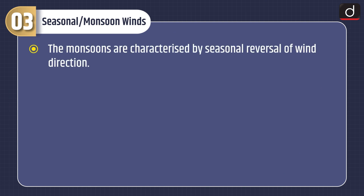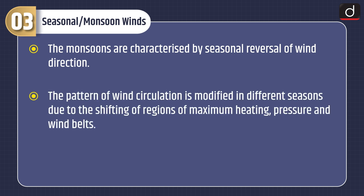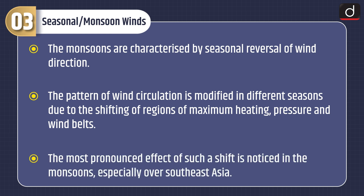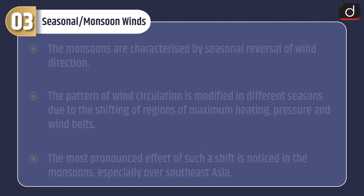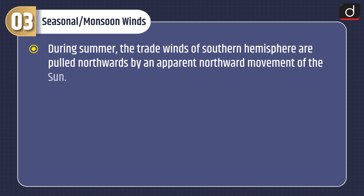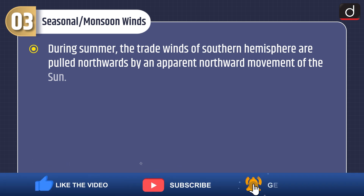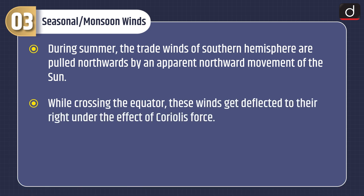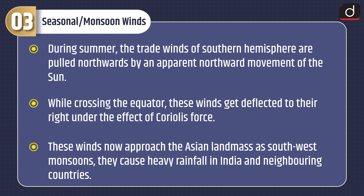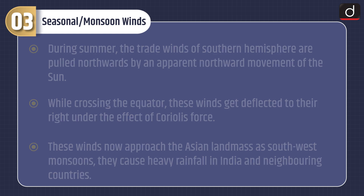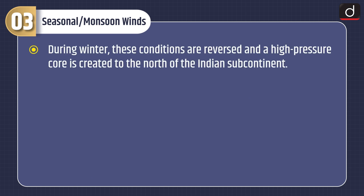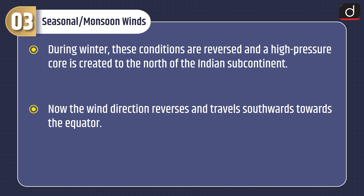Now let's discuss about seasonal and monsoon winds. The monsoons are characterized by seasonal reversal of wind direction. The pattern of wind circulation is modified in different seasons due to the shifting of regions of maximum heating, pressure and wind belts. The most pronounced effect of such a shift is noticed in the monsoons, especially over southeast Asia. During summer, the trade winds of the southern hemisphere are pulled northwards by an apparent northward movement of the sun. While crossing the equator, these winds get deflected to their right under the effect of Coriolis force, and now approach the Asian landmass as southwest monsoons, causing heavy rainfall in India and neighboring countries. During winter, these conditions are reversed and a high-pressure core is created to the north of the Indian subcontinent, and the wind direction reverses, travelling southwards towards the equator.